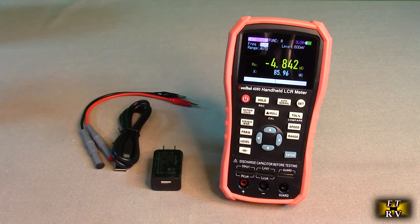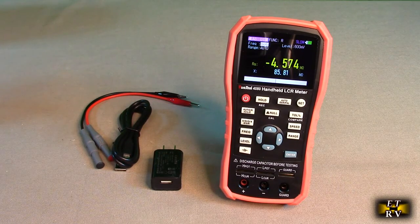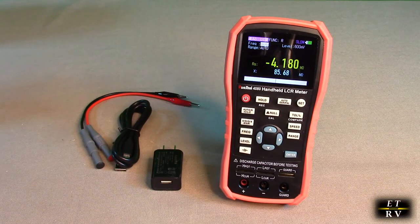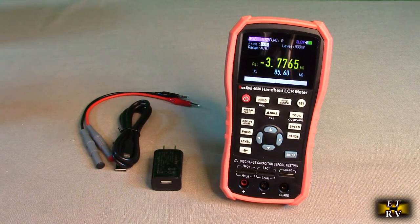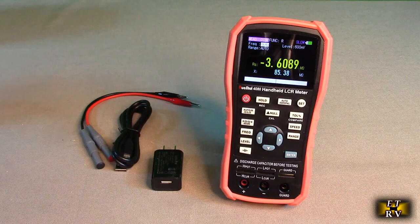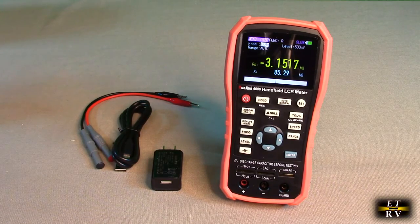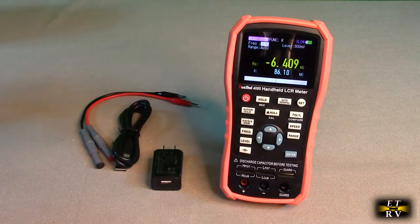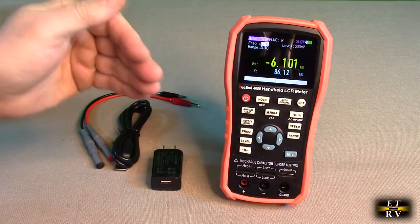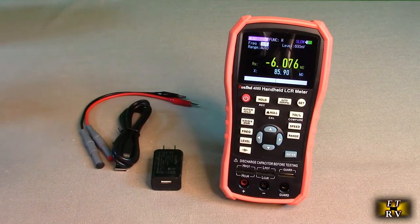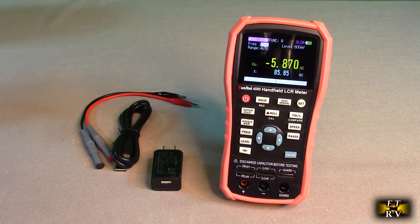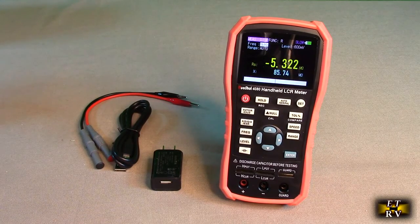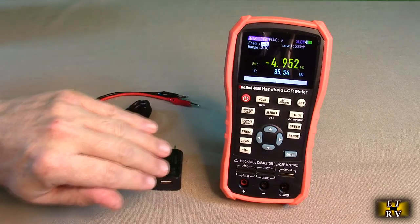A lot of times you have capacitors, inductors, and resistors laying around in your lab and you don't know what they are. They're hard to read or the printing has come off them. This is a way to measure that, and it's amazing because you've got inductance and capacitance and resistance. Most multimeters just do capacitance, this does inductance also.